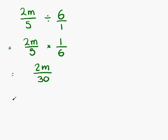Is this our final answer? It isn't, because we can simplify. 2 goes into both 2 and 30. 2 goes into 2 once, so that leaves us with 1m, or m, on the top. And 2 goes into 30, 15 times. So our final answer is m over 15.